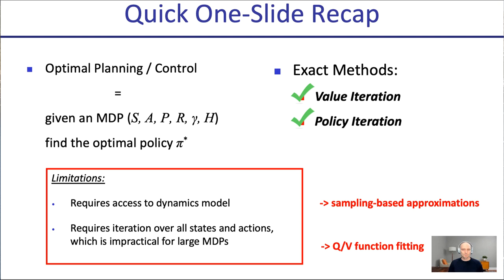Quick one-slide recap of what we did in lecture one. We looked at optimal planning or control, which is: given an MDP consisting of a set of states, actions, often a probabilistic transition model, a reward function, a discount factor gamma, and a horizon capital H — find the optimal policy pi star. We saw some exact methods to do this: value iteration and policy iteration. These are exact solution methods.